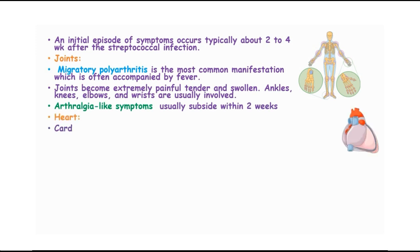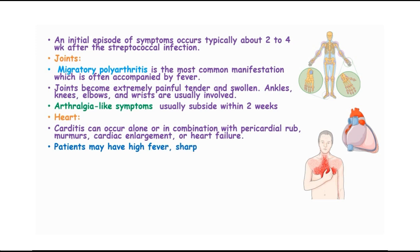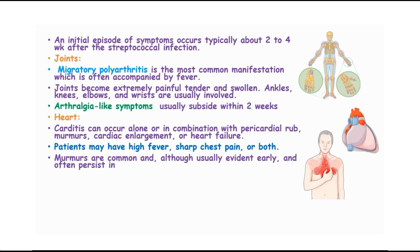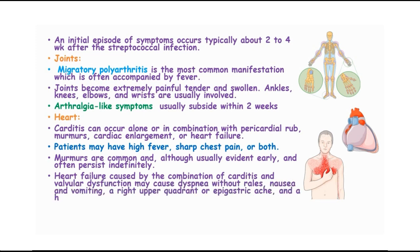In the heart, we have carditis occurring alone or in combination with pericardial rub, cardiac enlargement or heart failure. Patients may have high fevers, sharp chest pain or both, and murmurs are common, usually evident early and often persist indefinitely. Heart failure caused by a combination of carditis and valvular dysfunction may cause dyspnea, nausea and vomiting, right upper quadrant or epigastric ache, and a hacking non-productive cough.